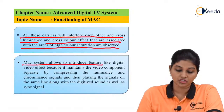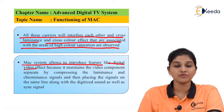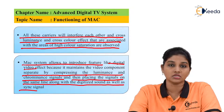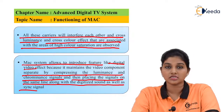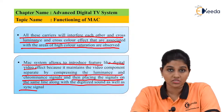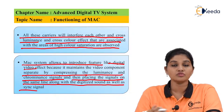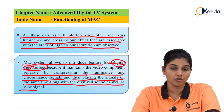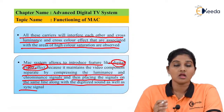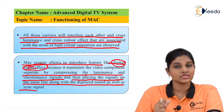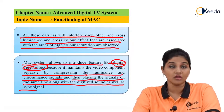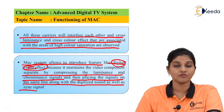The MAC system allows introduction of features like digital video effects, because it maintains the video components separate by compressing the luminance and chrominance signals and then placing them on the same line along with the digitized sound and sync signal. This is possible because MAC uses a digital system, and the video components are separated by compressing the luminance and chrominance information into one signal placed alongside the digitized sound and sync signal.